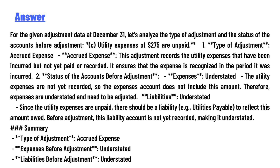Before the adjustment, this liability account is not yet recorded, making it understated. Summary: type of adjustment — accrued expense; expenses before adjustment — understated; liabilities before adjustment — understated. That's the correct answer.